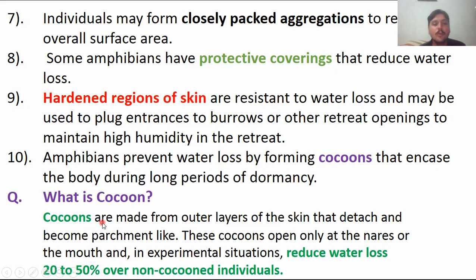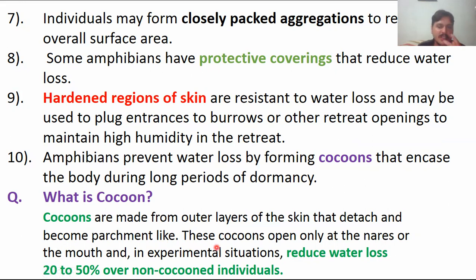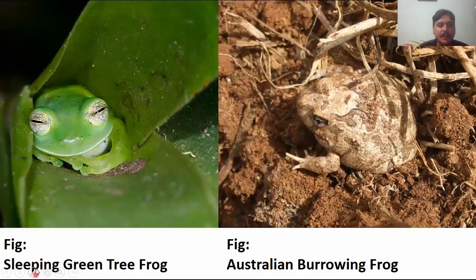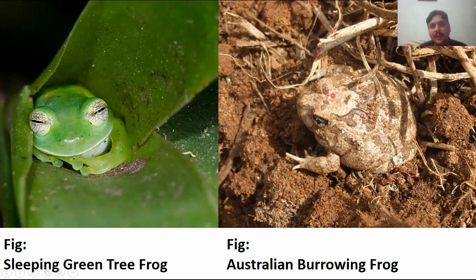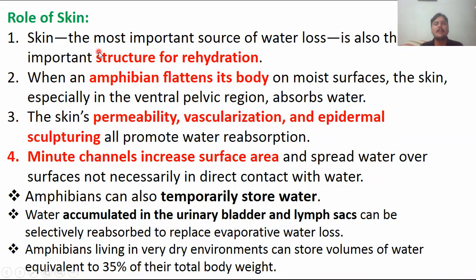What is a cocoon? This is a very important short question. Cocoons are made from the outer layer of skin that detaches and becomes parchment-like. This adaptation is present in amphibians for osmoregulation. Here you can see a sleeping green tree frog. The Australian burrowing frog burrows underground during the day to reduce dehydration. The next topic is the role of skin in osmoregulation.